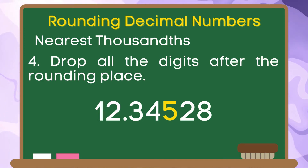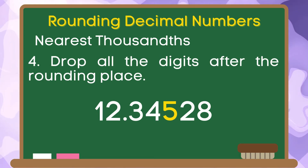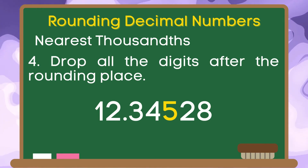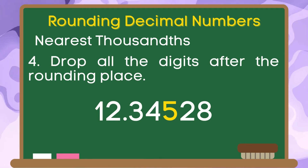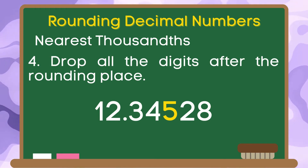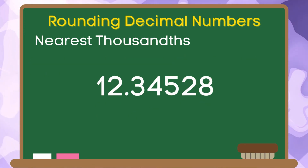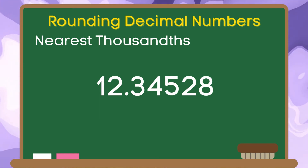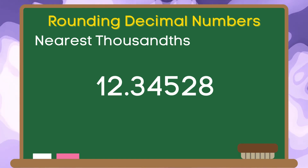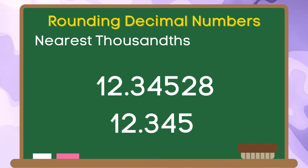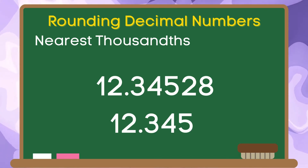And for the last step, drop all the digits after the rounding place. The digits 2 and 8 at the right side of 5 will be removed. Therefore, if we are going to round 12 and 34 thousand 528 hundred-thousandths to the nearest thousandths, the answer is 12 and 345 thousandths.